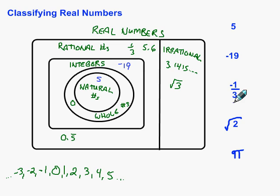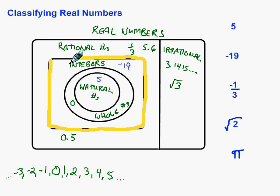The next one we've got negative 1 third. Well, anytime we have a fraction or a decimal, that puts us all the way out to the rationals right away. Because we don't have any decimals or fractions within this group.